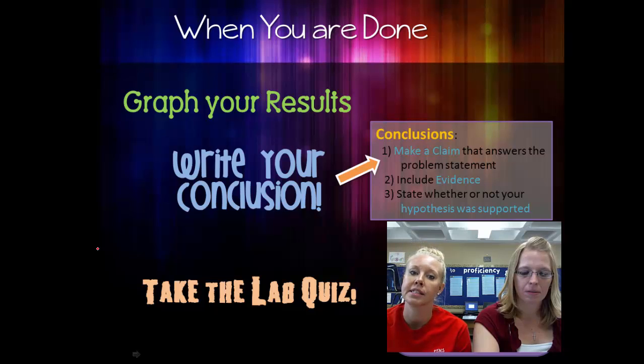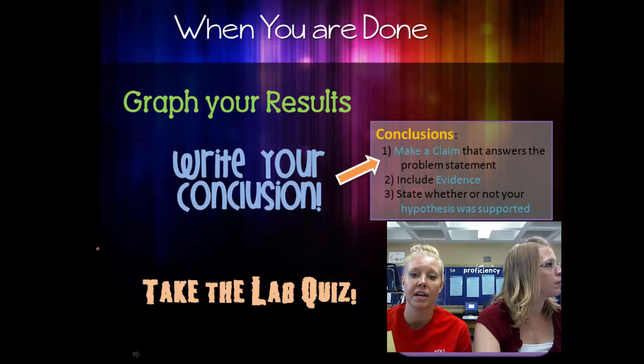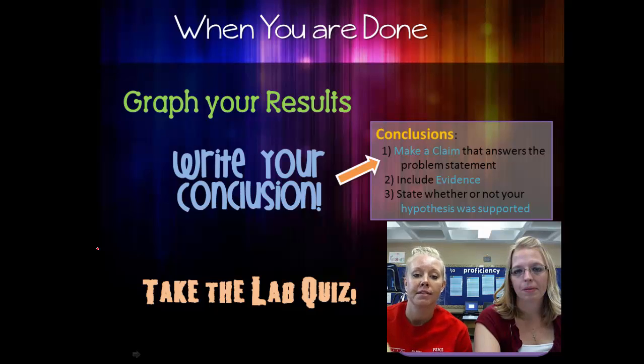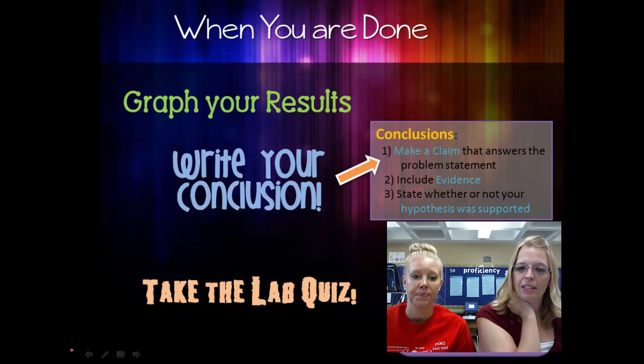So as the resistance increased, what did you see happen? And then you're going to include evidence. Your evidence has to have data, so specific numbers from what you collected. And then you've got to tell us whether or not your hypothesis was supported. Remember, do not use words like correct, incorrect, right, or wrong. Nope, that's not correct to do.